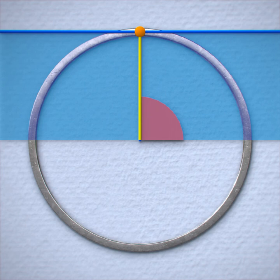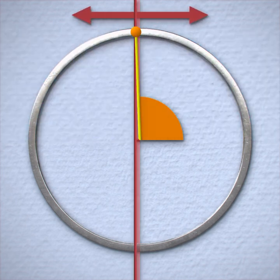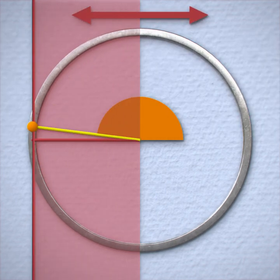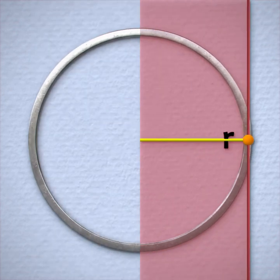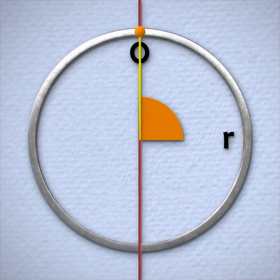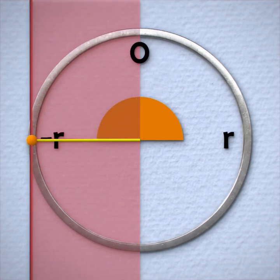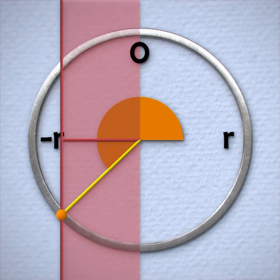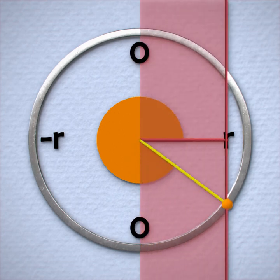Instead of looking at the height of the point, we could consider its position side to side. We'll see a similar pattern, with the point starting one radius to the right, coming in to meet the center at a distance of zero, then moving over one negative radius to the left, back to zero, and returning to the right.